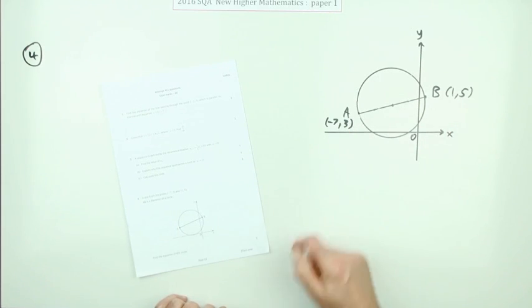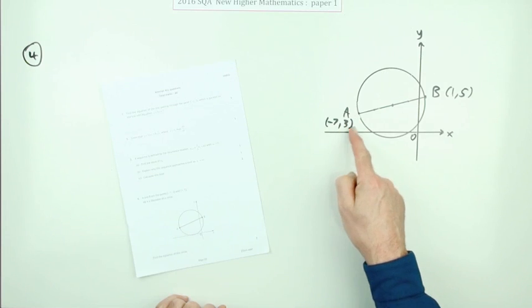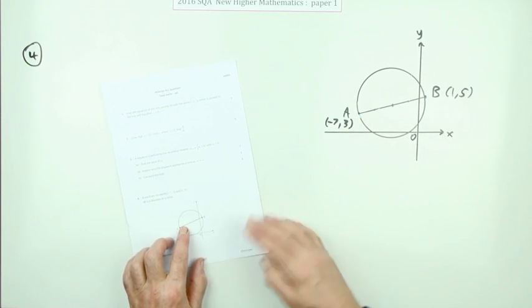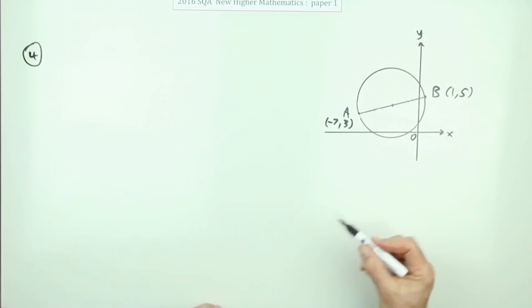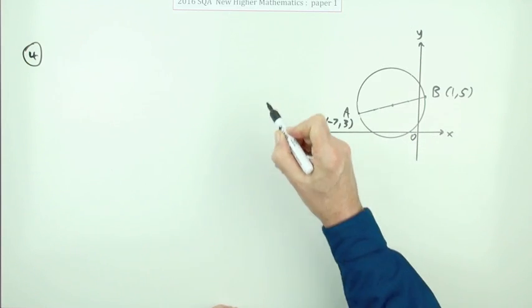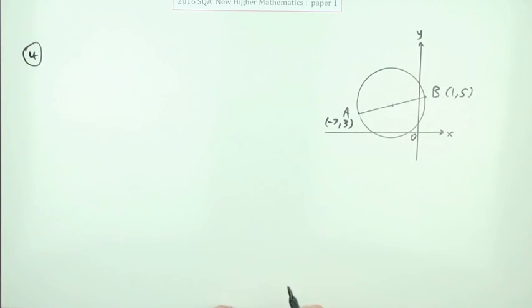AB is a diameter. Gives the coordinates of A and B. A is negative seven, three and B is one, five. What's the equation of that circle? Well, the three marks will be: what's the centre, what's the radius, and put it all together.